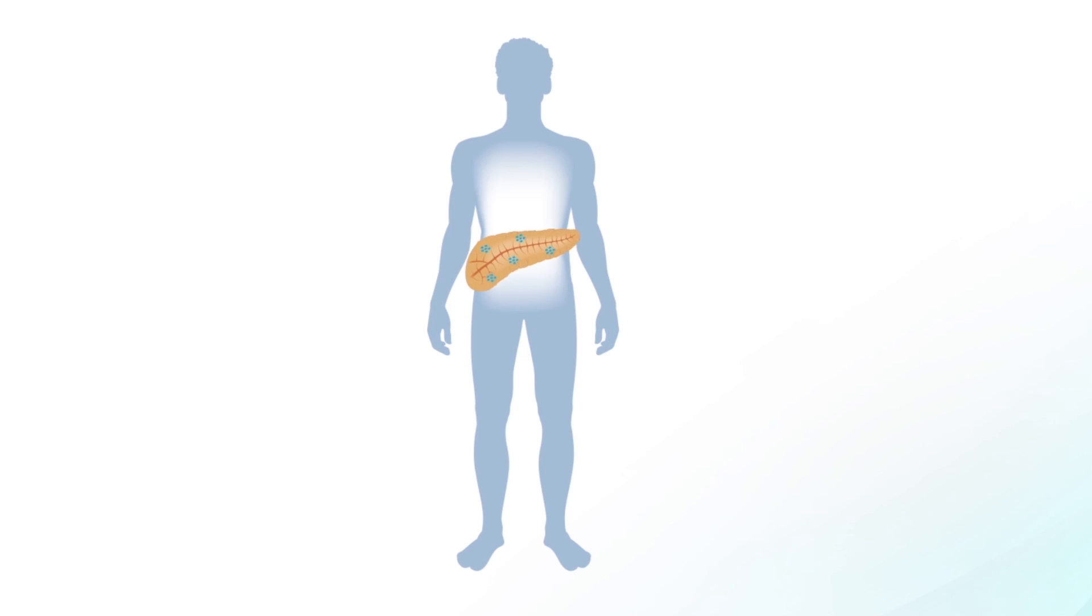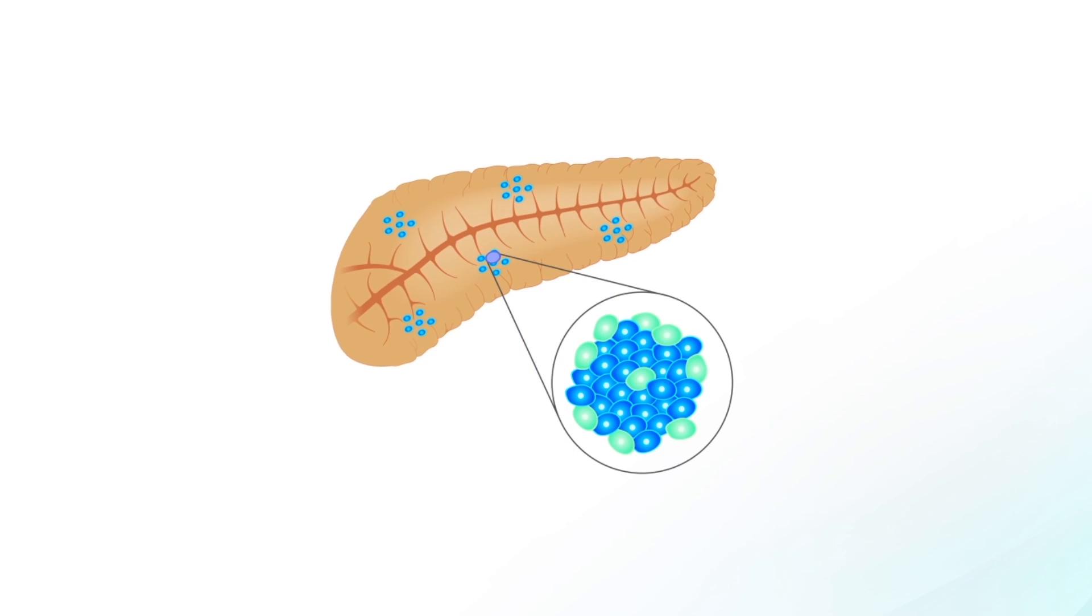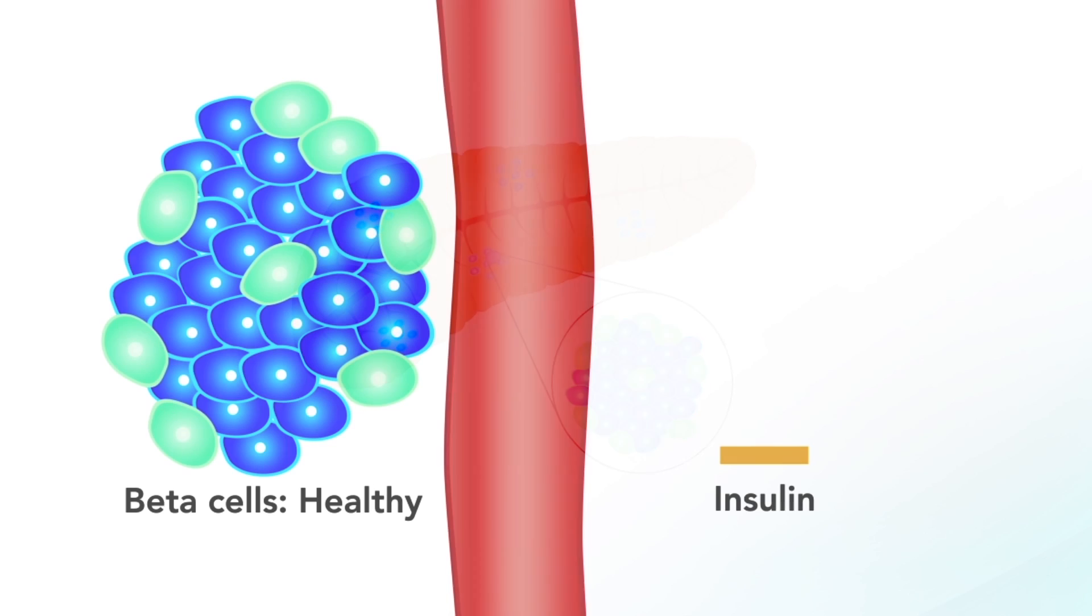To understand an exciting new diabetes study at UAB, you need to look deep inside the pancreas. That's where specialized cells called beta cells produce insulin, releasing it into the bloodstream to control blood sugar levels.